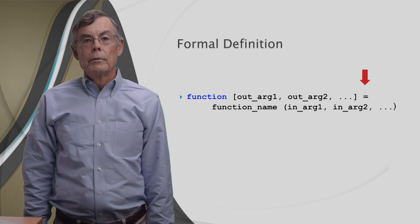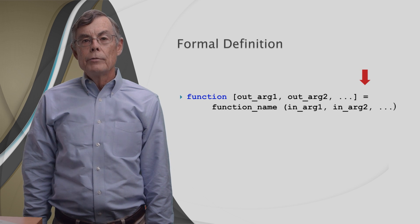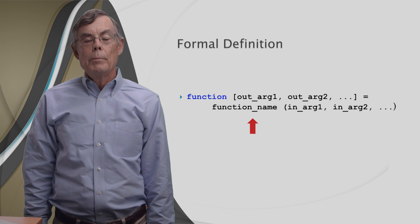And if you have output arguments, even one of them, then you have to have an equal sign, otherwise it can be omitted.